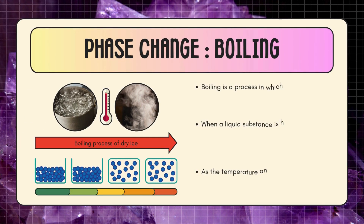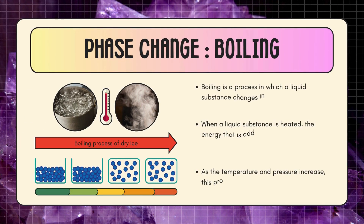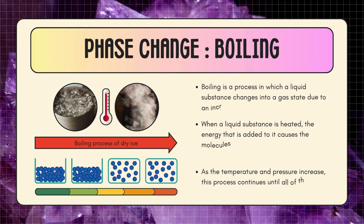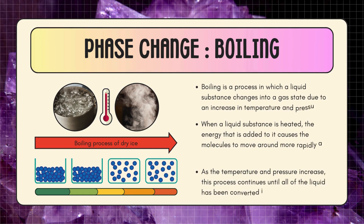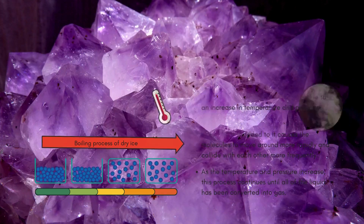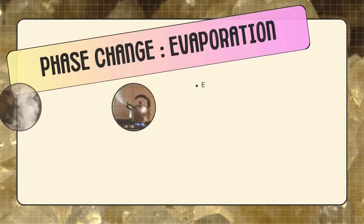Boiling is a process in which a liquid substance changes into a gas state due to an increase in temperature and pressure. When a liquid substance is heated, the energy added to it causes the molecules to move around more rapidly and collide with each other more frequently. As the temperature and pressure increase, this process continues until all of the liquid has been converted into gas.